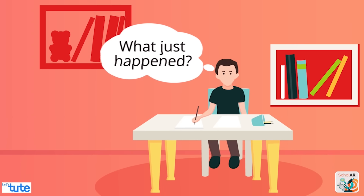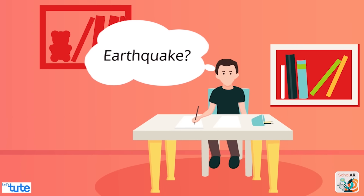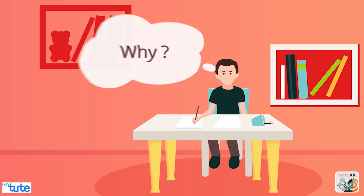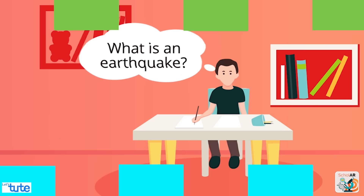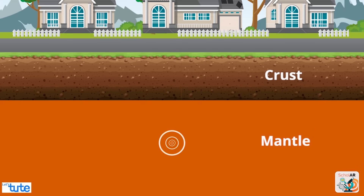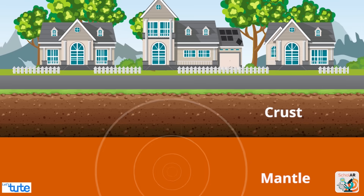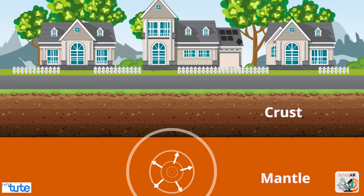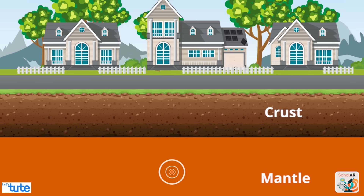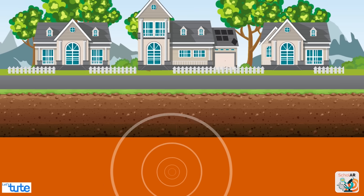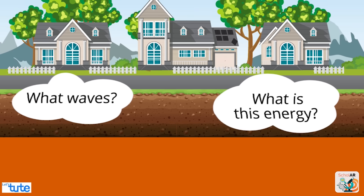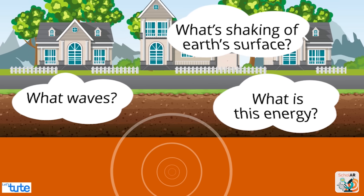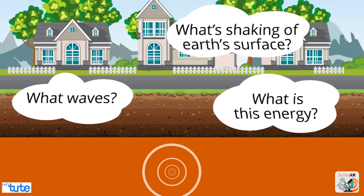What just happened? Did we just experience an earthquake? But why does this happen and what exactly is an earthquake? Earthquakes are caused by the release of energy that generates waves which travel in all directions, causing this shaking of Earth's surface. What exactly is this energy? What waves? What's shaking of Earth's surface? This is so complicated — well, calm down, let me explain everything in a simple and detailed manner.